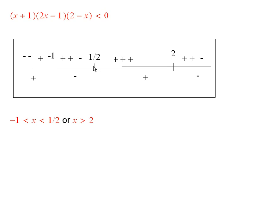So, here I've drawn a picture. These points here, 1 half, negative 1, and 2, are the points at which one of these factors is equal to 0. So, these are the only points at which this left-hand side is equal to 0.